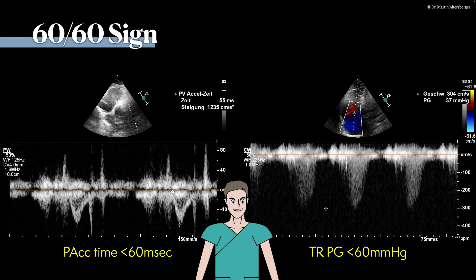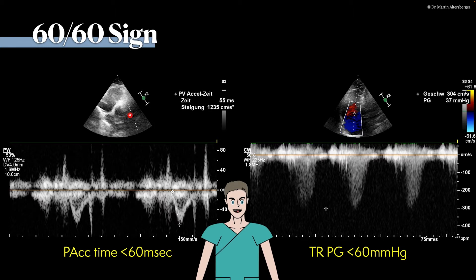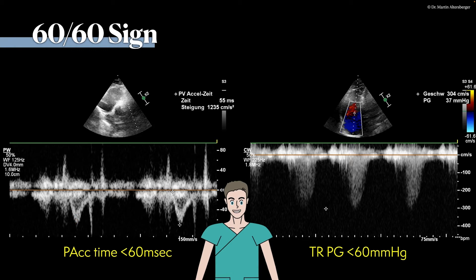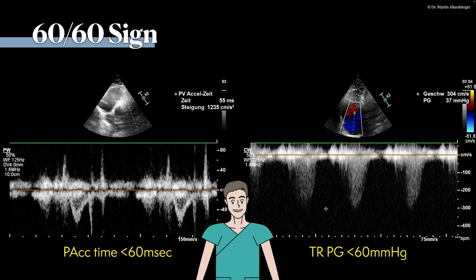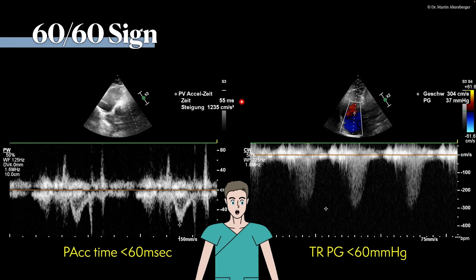Another sign we may utilize in case of a central or hemodynamically relevant pulmonary embolism is the so-called 60-60 sign. We place the pulse wave Doppler below the pulmonic valve and measure the pulmonic acceleration time — the time where blood is pushed out of the right ventricle. In a central or hemodynamically relevant pulmonary embolism, this interval will be very short due to high pulmonary artery pressure. In this case it is 55 milliseconds, so the pulmonary acceleration time is below 60 milliseconds.